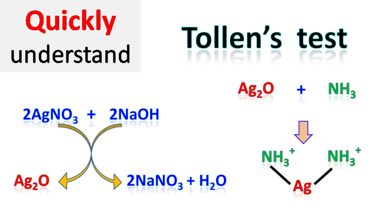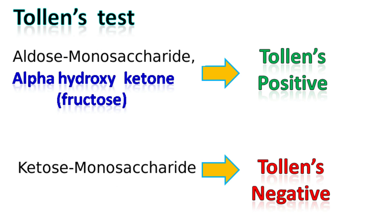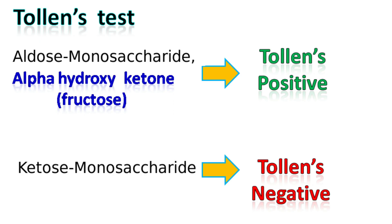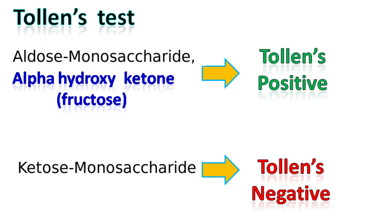Here's a quick biochemistry basics — let's talk about Tollens test. Tollens test is a test used to distinguish between aldehydes and ketones. In biochemistry, it is used to distinguish between monosaccharides having an aldehyde group versus monosaccharides having a keto group. Only the monosaccharide having an aldehyde group reacts to give a positive Tollens test.